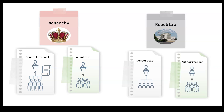We can have similar categories in a republic. We can have a democratic republic where the people participate and elect the leaders, or we can have an authoritarian republic where there is little public participation and authority runs top-down.